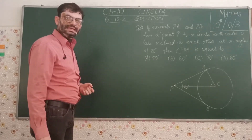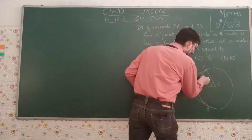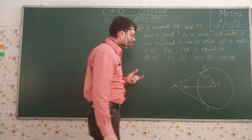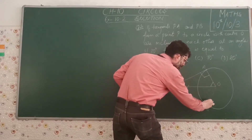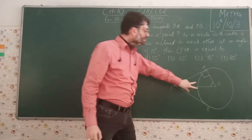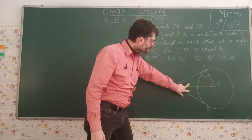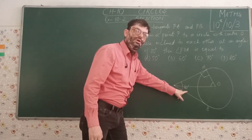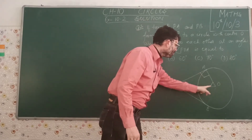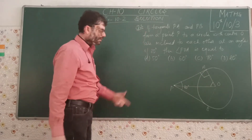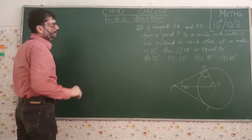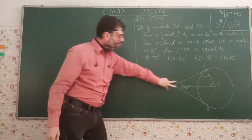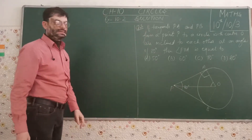Angle OAP is 90 degrees by theorem 10.1, since radius and tangent are perpendicular. We join OB as well. As proved in theorem 10.2, the two triangles OPA and OPB are congruent. So these two angles are equal — meaning the 80-degree angle is bisected, giving 40 degrees each. With one angle 40 degrees and another 90 degrees, we can find angle POA using the angle sum property of triangles.